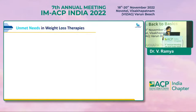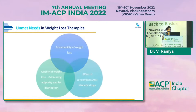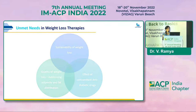Coming to the unmet needs in weight loss therapy: whatever therapy we use, we need the weight loss to be sustainable. It should mainly address decreased adiposity rather than muscle mass, and account for the concomitant effects of other anti-diabetic drugs. We need to look for a molecule which can address multiple effects — not only weight.